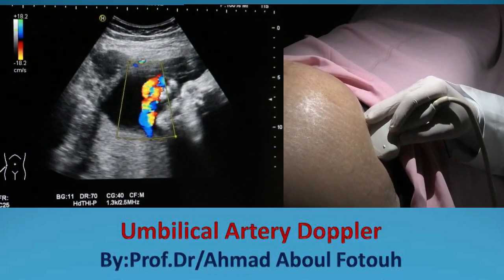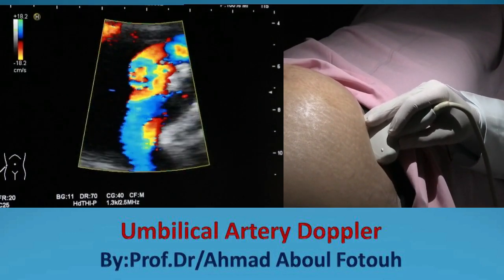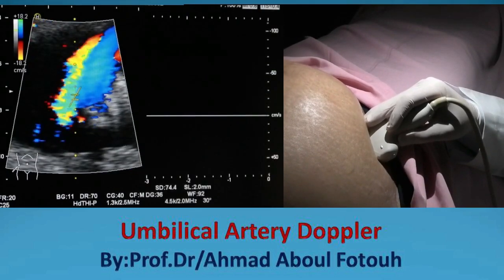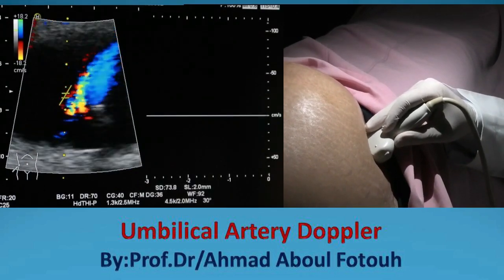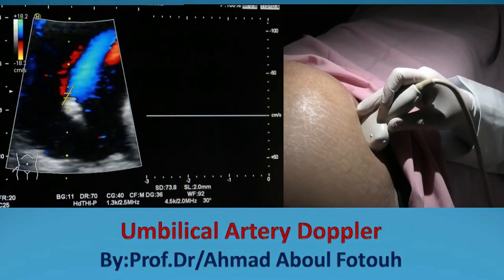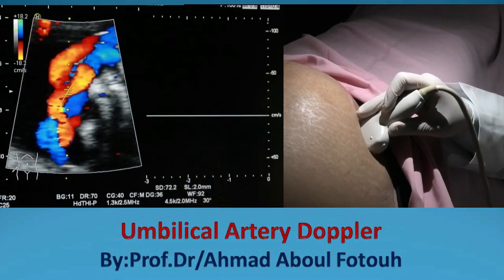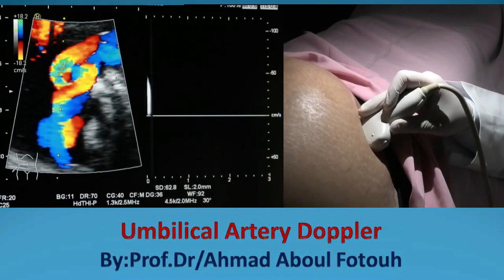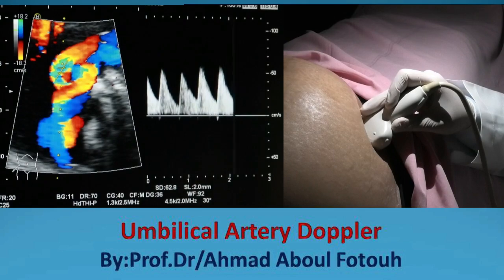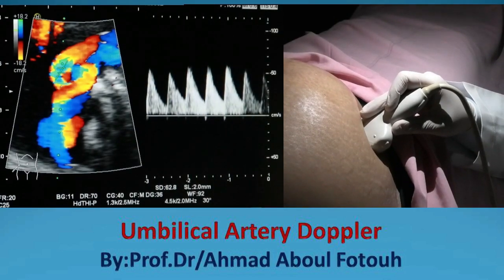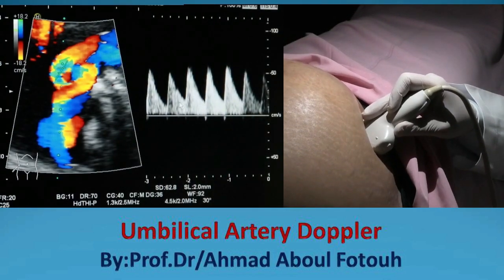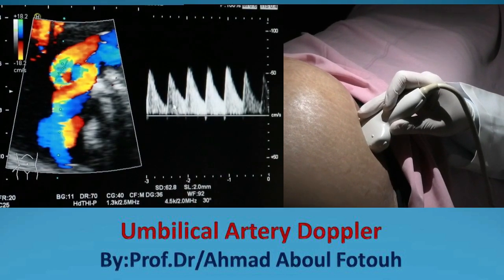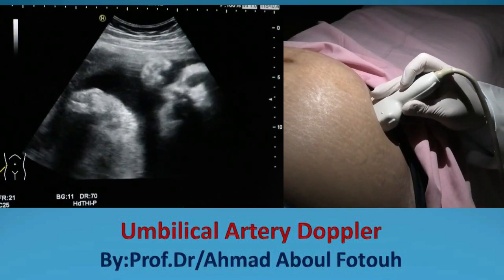Then apply color Doppler in a good area of the cord to maximize visualization and get a good axis. Adjust your hand to check the vessel area of this artery and get a good spectral flow. One very important point — look at this variation, which is normal due to patient breathing and movement.